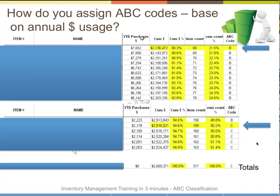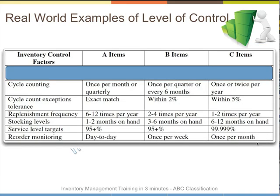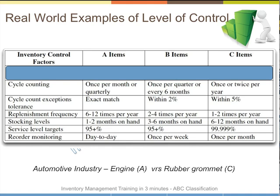They have an opportunity to apply a different level of control. For example, on cycle counting, A items could be done once per month, but C items could be done once or twice per year. For stocking levels, you could have low stock levels for A items but much higher for C items. Reordering frequency: A items could be day to day, but C items could be once per month. For instance, if you're an automotive supplier, your engines might be A items and your rubber grommets C items — so engines delivered daily, grommets delivered monthly.